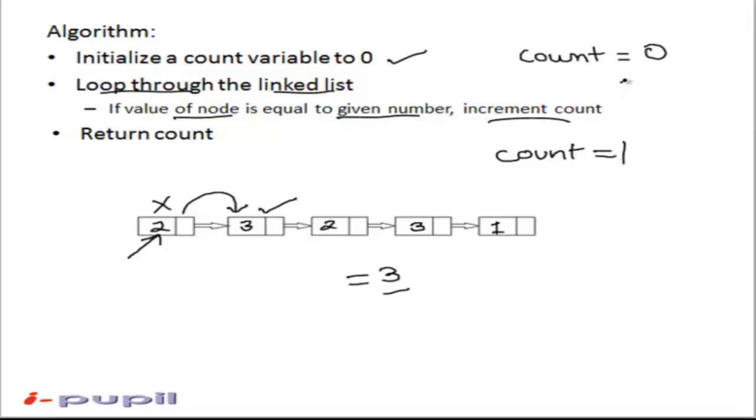We keep on repeating this process until we reach the end of the linked list. For our example, we get the value of count equal to 2, since 3 occurs 2 times in our linked list. Therefore, we return the value of count equal to 2 as our answer.